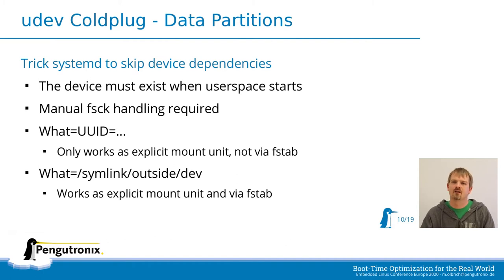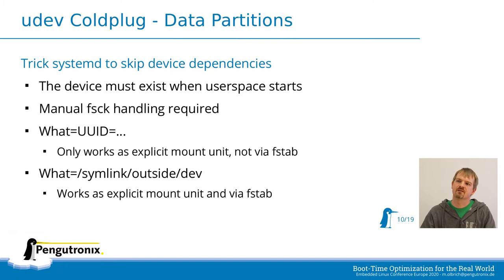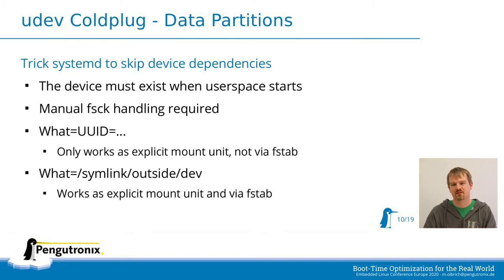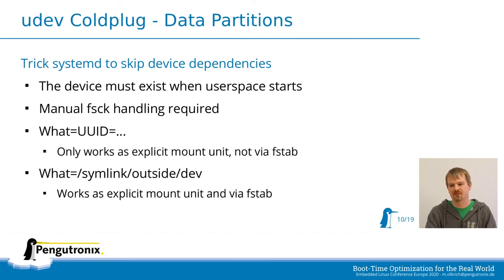If we use a symlink outside of /dev as the device source, systemd thinks it's not a device and won't add a dependency. The trade-off is we need to handle things like fsck manually, since systemd doesn't know it's a device and won't add a file system check for it.